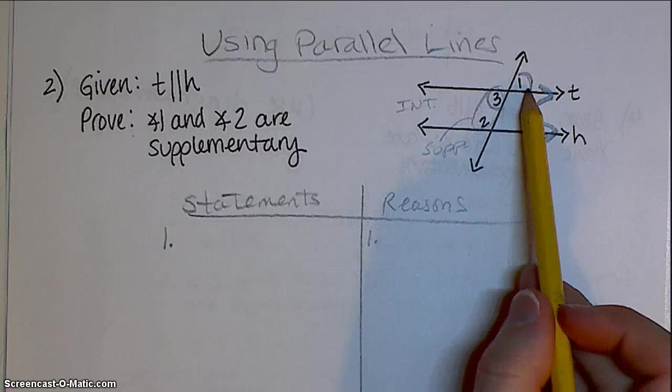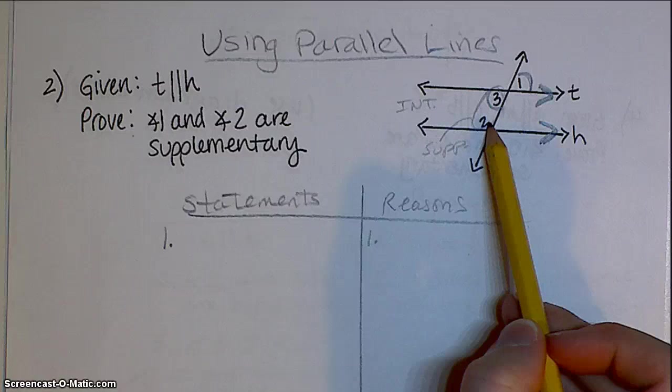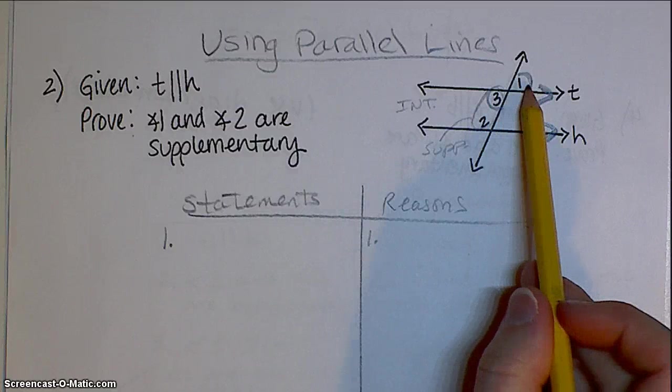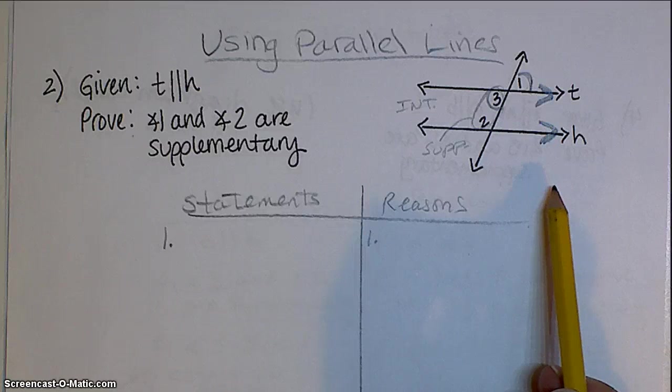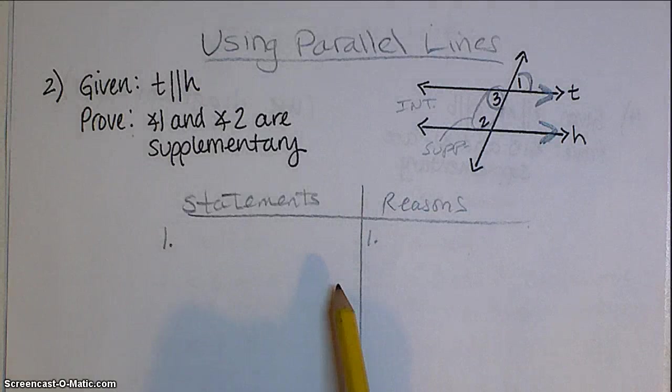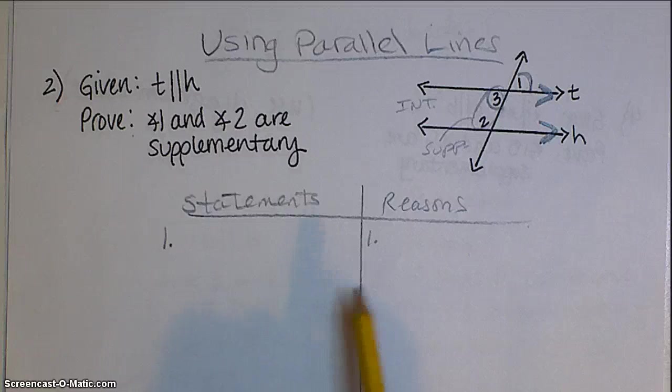Also, 3 is the same as 1, so there you go. I just got my game plan to show how 2 and 1 are supplementary. So once you develop a game plan or brainstorm, then you're going to go down to your 2 column proofs and start organizing your thoughts formally.